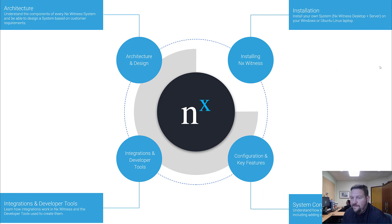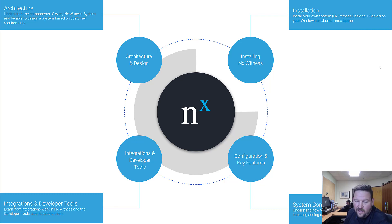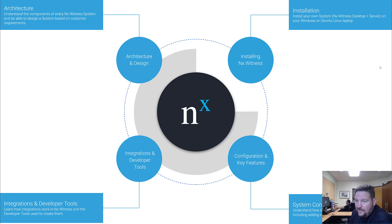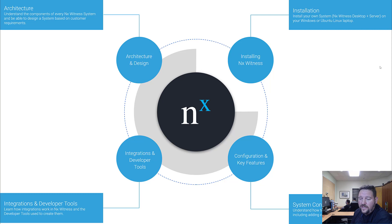There are basically four sections we're going to go over. The first is system architecture — making sure you understand the components in every NX Witness system and can design a system based on your customer's requirements. The second is installing NX Witness, mixed in along the way: installing NX Witness desktop, installing NX server, doing mobile, and then connecting to cloud. Then we're going to go over how to configure your system — how to set up rules, how to add cameras, storage, users, all that kind of good stuff.